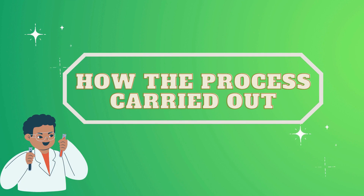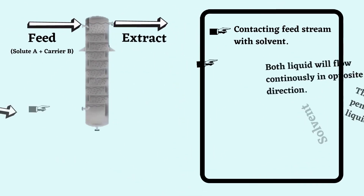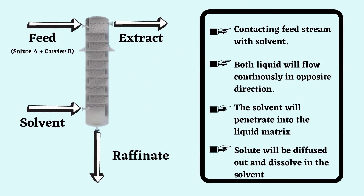Next, I will explain how the liquid-liquid extraction process is carried out. For liquid-liquid extraction, we have two inlet streams and two outlet streams. In the feed stream, we have one immiscible liquid containing solute A and carrier B, which are going to be separated by contacting it with another immiscible liquid called the solvent. These two immiscible fluids will flow continuously in opposite directions and the extraction process takes place. The solvent will penetrate into the liquid matrix, causing the solute to be separated from the carrier. The solute then diffuses out of the liquid matrix and dissolves in the solvent. After the extraction operation, the extract phase is at one end and the raffinate phase is at the other end.